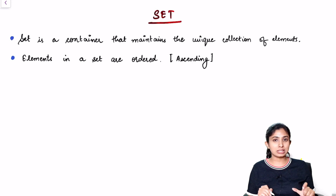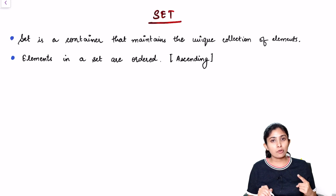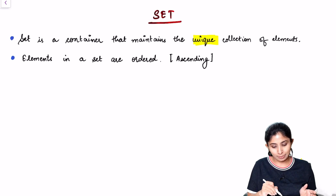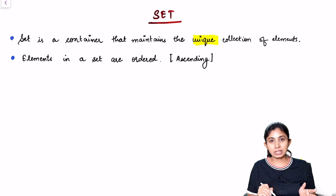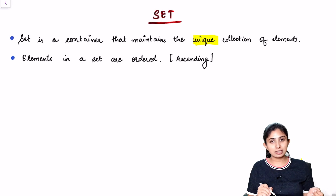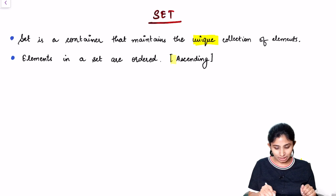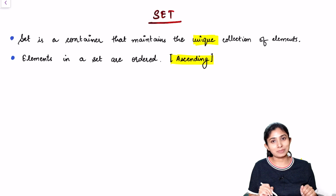To understand set, you need to understand its two properties. First, a set is a container that stores unique elements — that means the elements will not be repeated in our set. And second, the elements in our set are ordered, and by default they are ordered in ascending order.